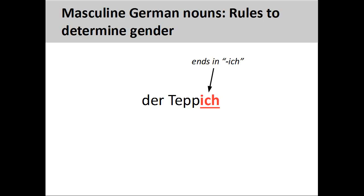Nouns ending in '-ich,' such as 'Teppich' (rug or carpet), are masculine. Nouns ending in '-ner,' such as 'Rentner' (pensioner), are also masculine. We'll see a way to form a feminine version of these nouns in a later presentation.